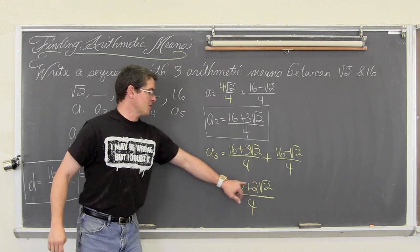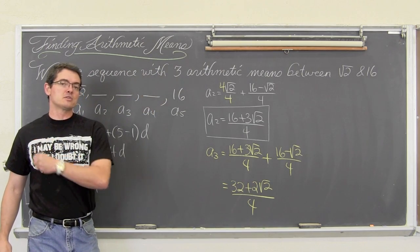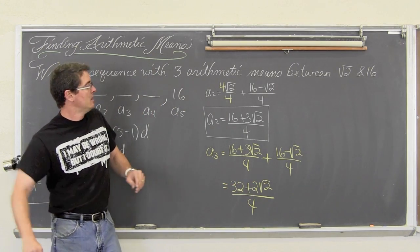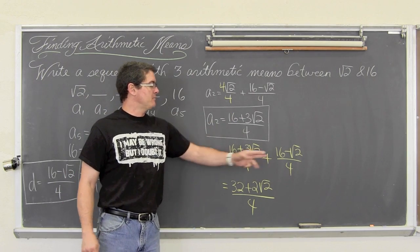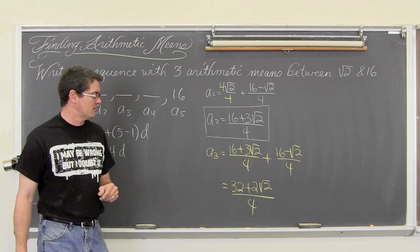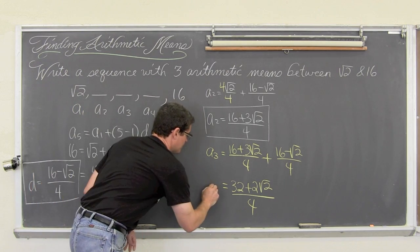Now these two terms are both even, so I could factor a 2 out and then cancel that factor of 2 with the denominator. But I have to continually keep adding by 16 minus square root of 2 over 4, so I need that common denominator. I am not going to reduce it down. That is a sub 3.